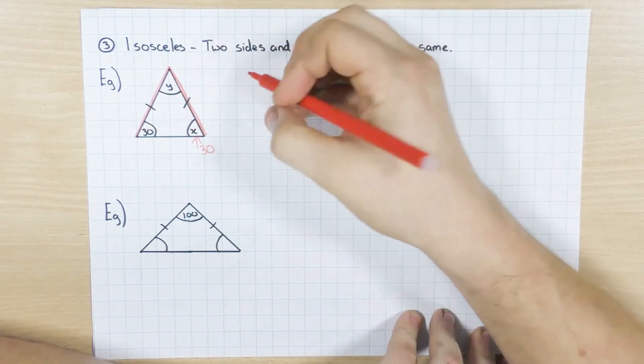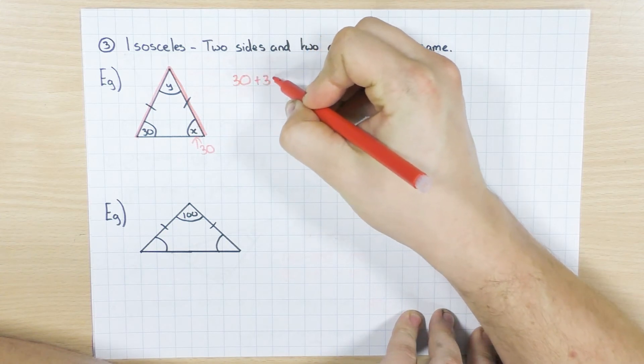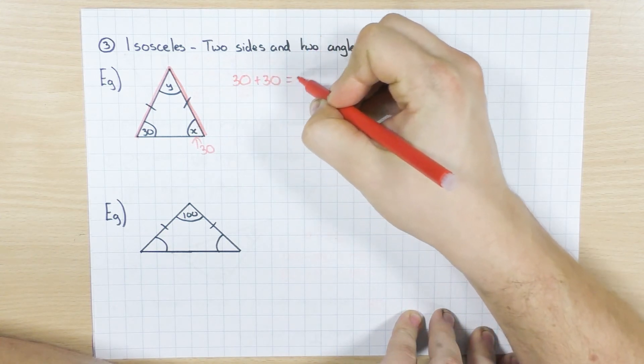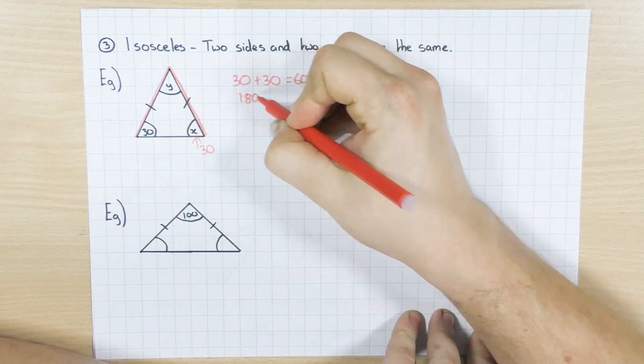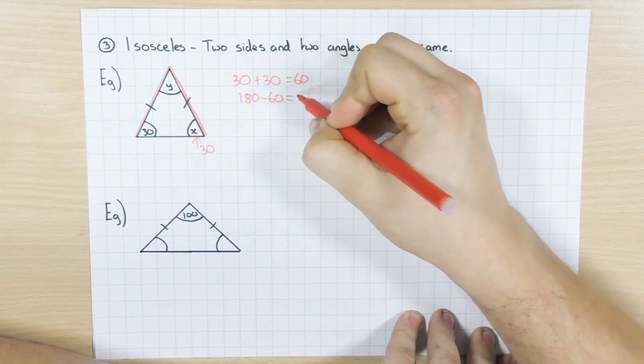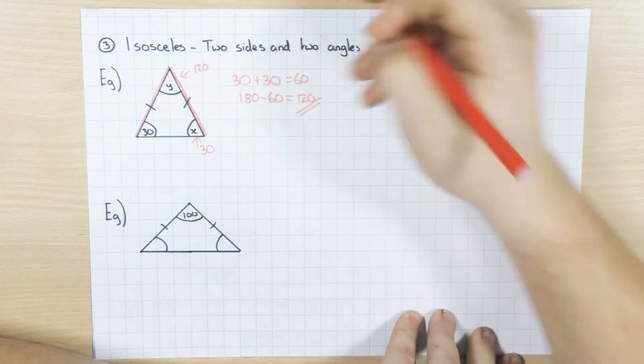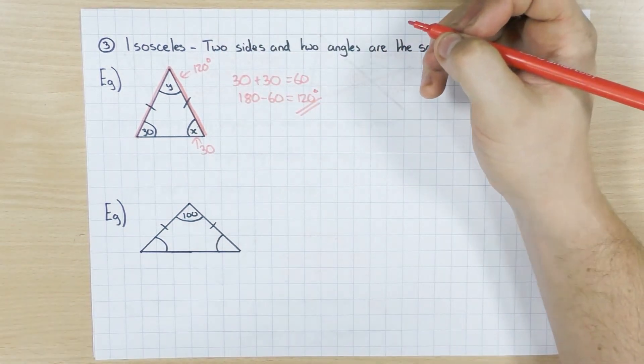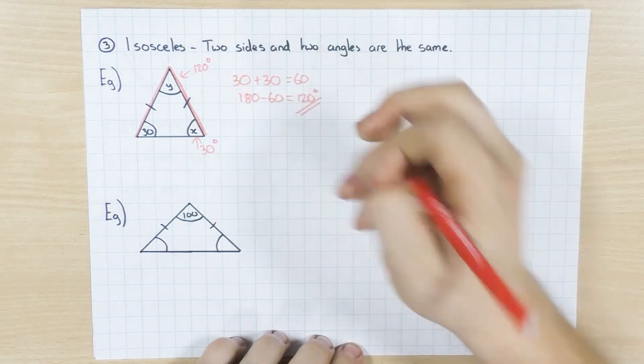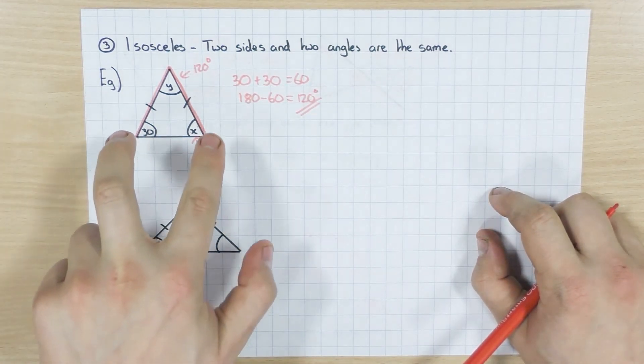Now, because I know that's 30 and that's 30, I can do exactly the same thing like I did in my first example. I can do 30 add 30, which gives me 60. And because angles in a triangle add up to 180, I can do 180 minus 60, which will give me 120. So Y would be 120 degrees. 120 degrees and 30 degrees. Okay? So that's one case with an isosceles triangle where you've got those two the same.